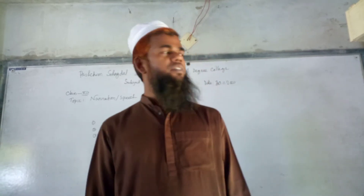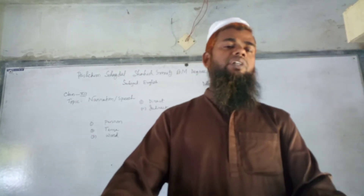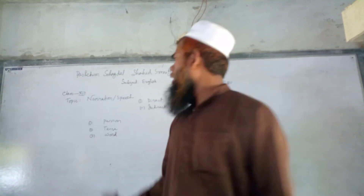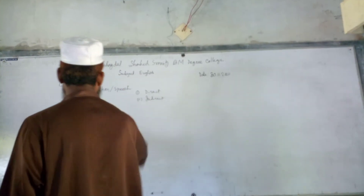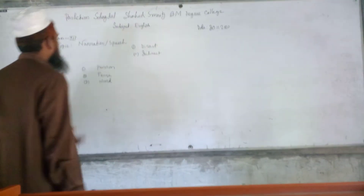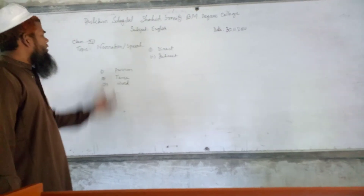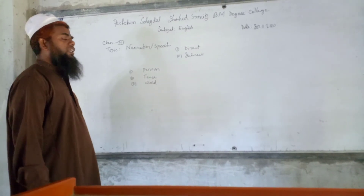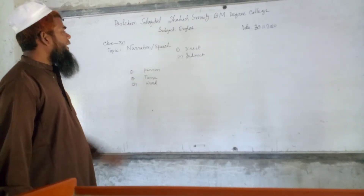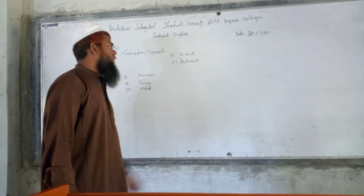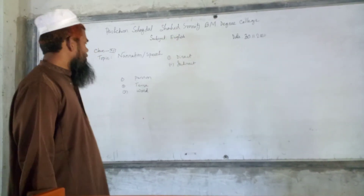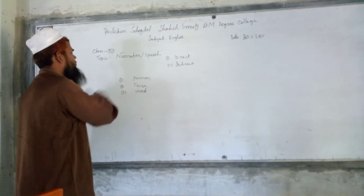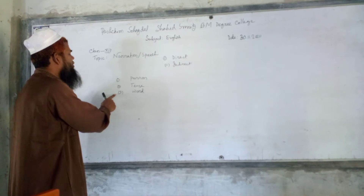My dear students, you will have to know certain rules and regulations when we make direct narration into indirect narration. You will have to consider three items: first, person; second, tense; and third, word.